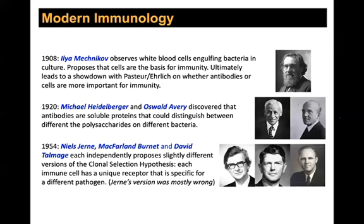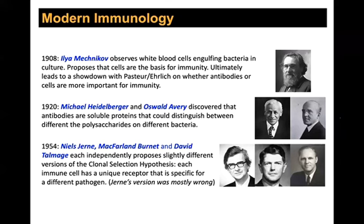Burnett, Talmadge, and Jerne basically said that each white blood cell has a unique receptor specific for a different pathogen, and when you get infected, only cells with that unique receptor for that pathogen respond. In reality, Niels Jerne was wrong — he proposed they all have the same receptors and the protein molded to fit and imprinted in the cell. We now know that's wrong, but that didn't stop them from co-awarding the Nobel Prize in Medicine to all three. So you can be wrong and still get credit for it, even in immunology.